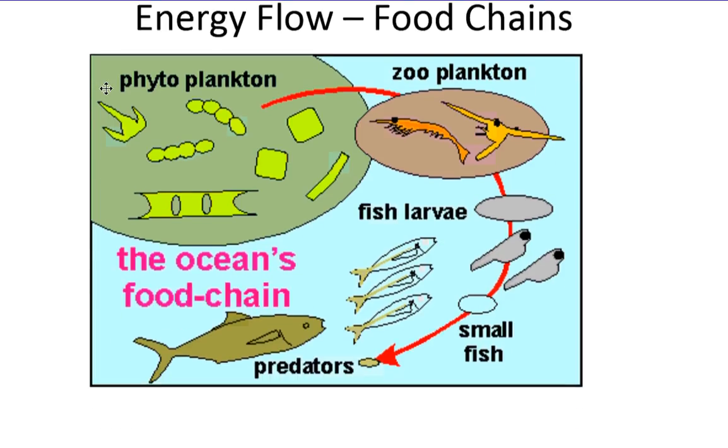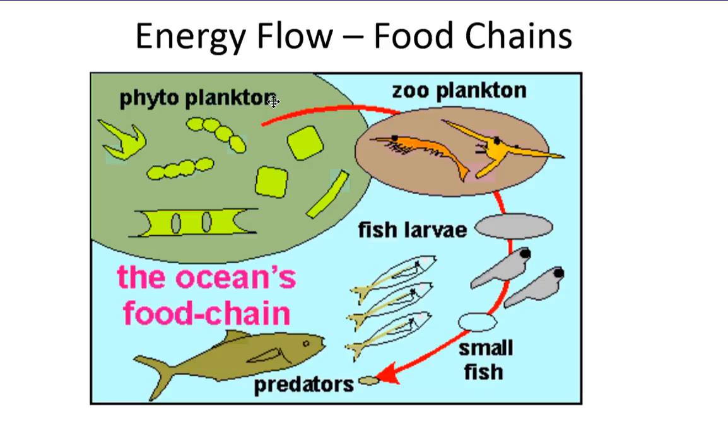Here's a food chain in an aquatic ecosystem. Very simple food chains, basically big fish eats the smaller fish, and smaller fish eats the smaller fish until you get down to these little plankton that are like little plants and little plankton that are like little animals. Real simple.